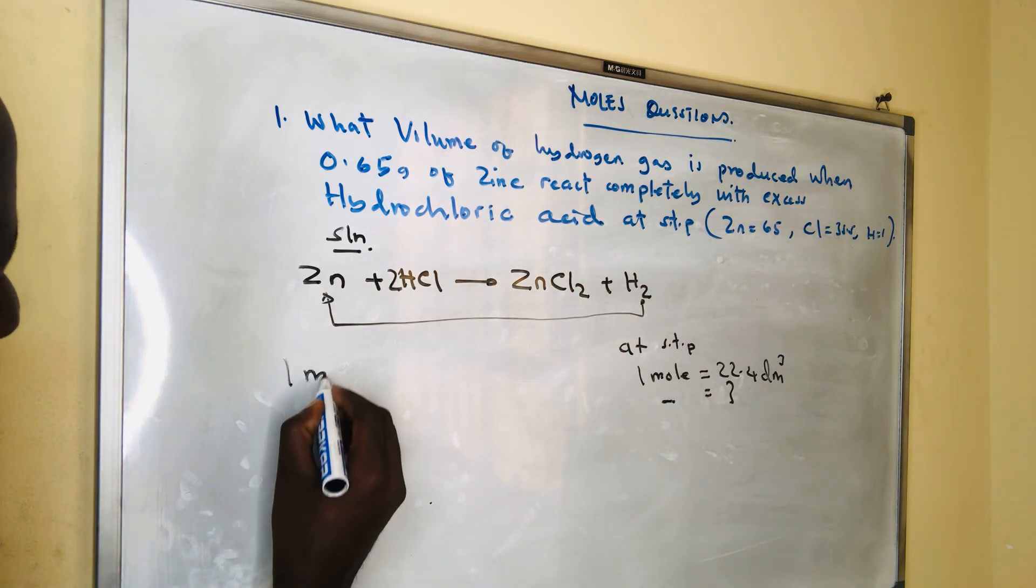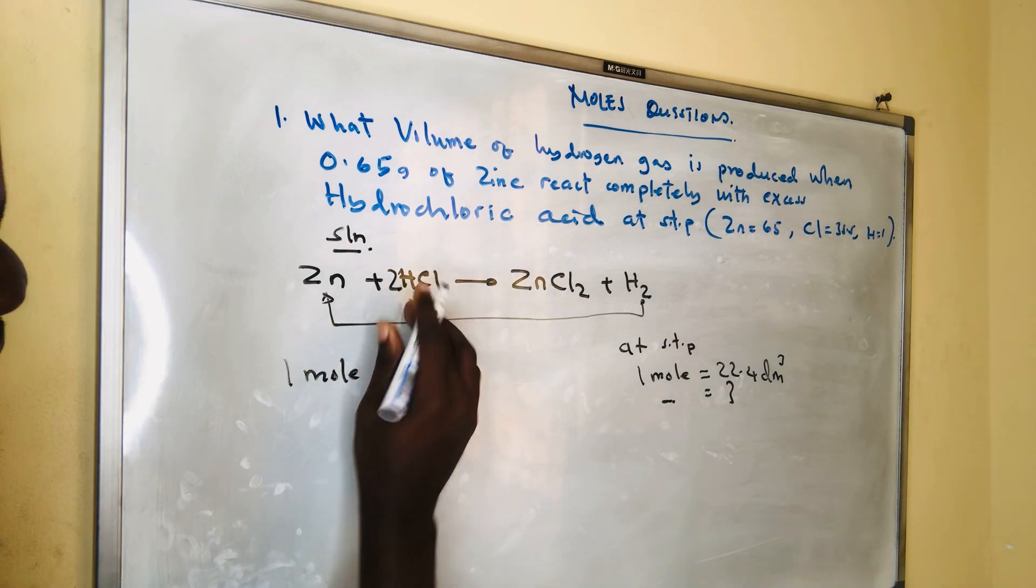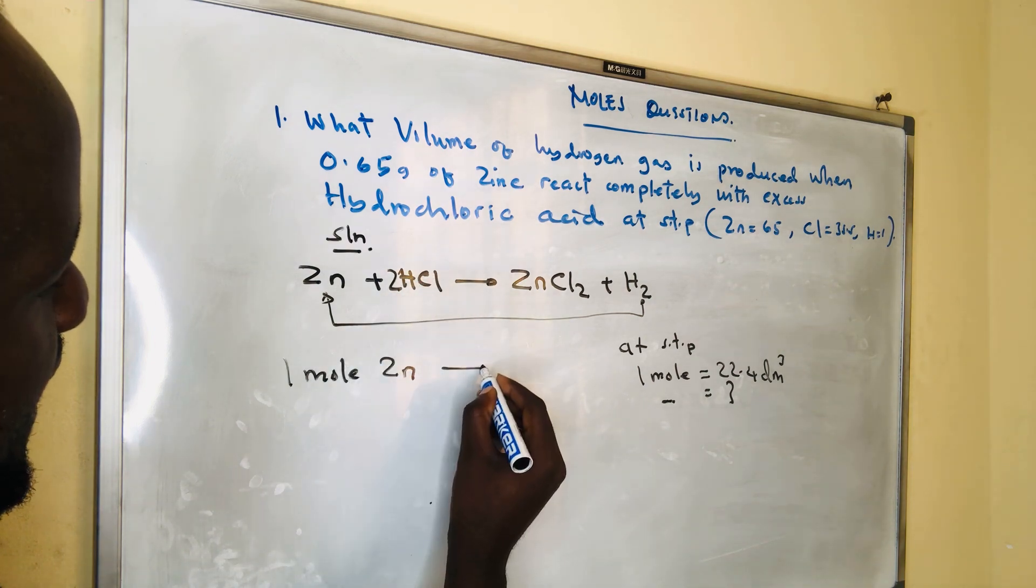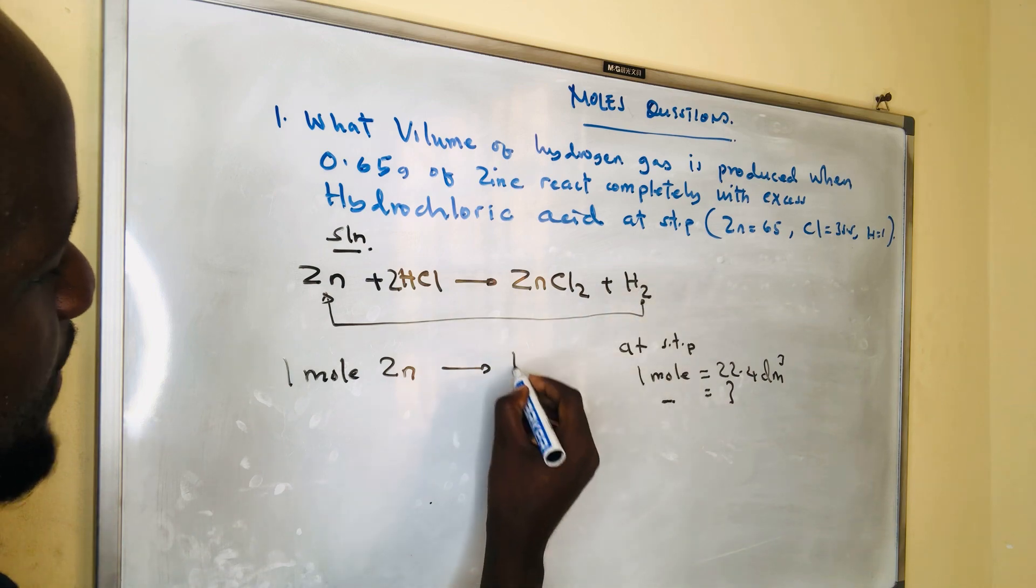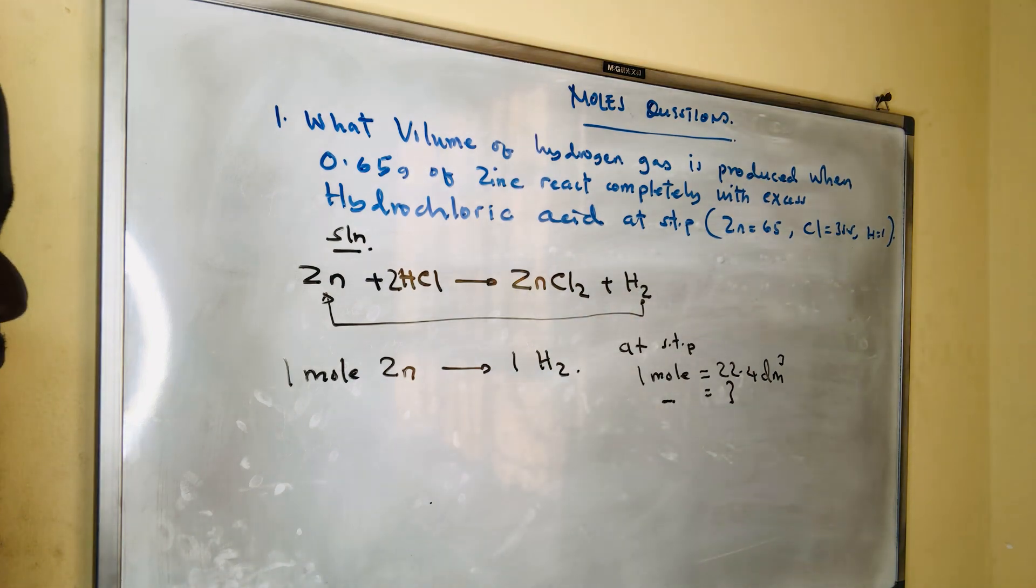From the balanced equation, we have 1 mole of zinc, 2 moles of HCl, and 1 mole of hydrogen gas.